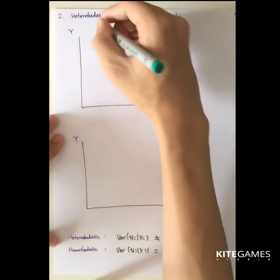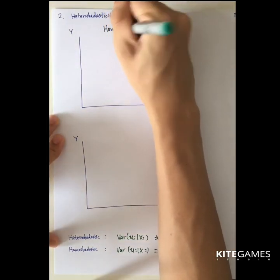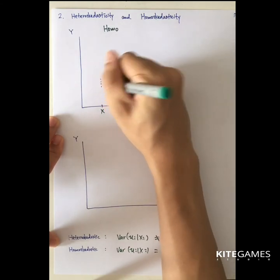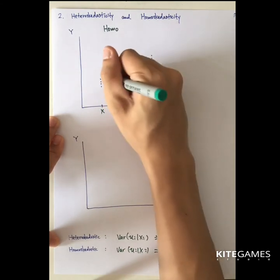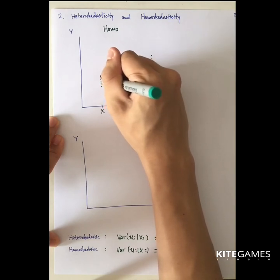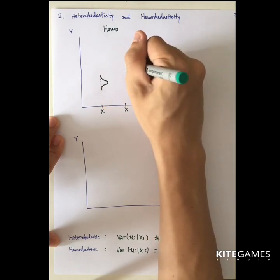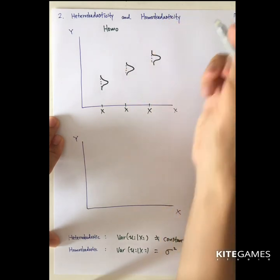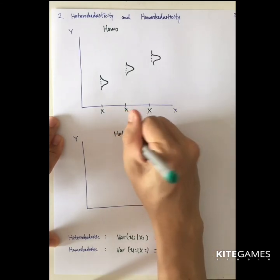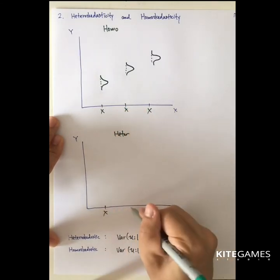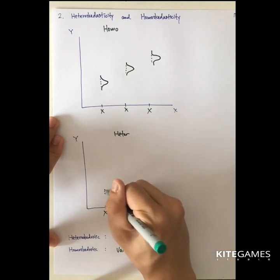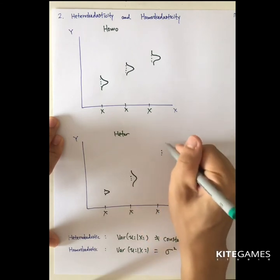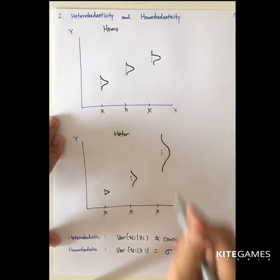If you draw a diagram for the homoscedastic case, no matter what the value of x, the spread of the data — if you draw the probability distribution — is always the same. But for the heteroscedastic case, when x increases, the distribution changes, meaning their variance is actually changing.